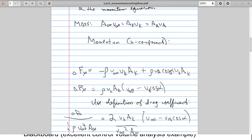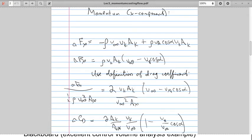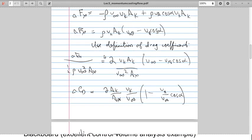And then we have rho VA cos alpha times VK AK again, where this really should be AA VA here, but we've substituted in that this is AK VK. We can simplify that and use the definition of drag coefficient to just reorganize and end up coming up with this equation that the delta CD is 2 times AK over AX times VK over V infinity times 1 minus VA over V infinity cos alpha.